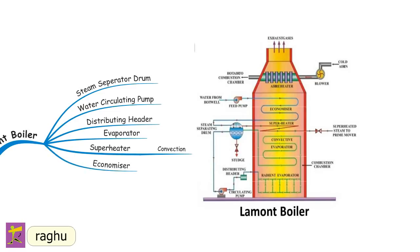The economizer preheats the feed water using exhaust gases flowing out from the boiler to the atmosphere. The preheated water requires only a small amount of additional heat in the boiler, which increases boiler efficiency. The feed water supplied by the feed pump is heated in the economizer on its way to the steam separator drum. The air preheater uses exhaust gases to preheat air, which is then supplied to the furnace for combustion.